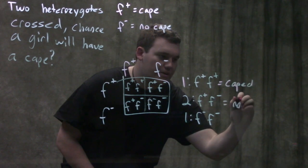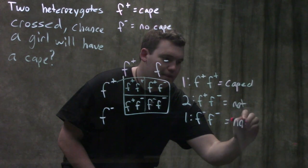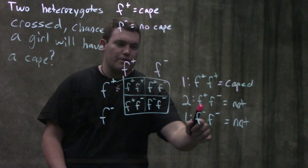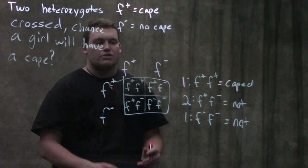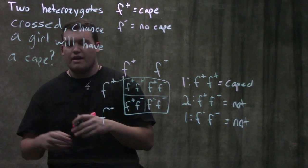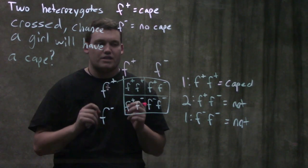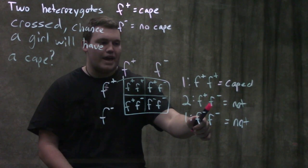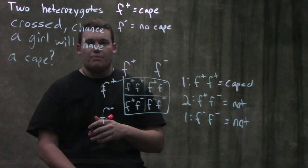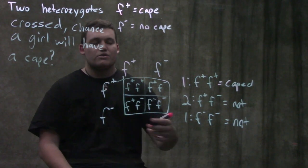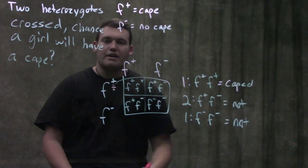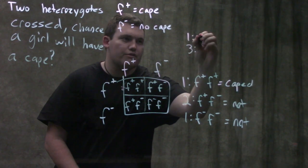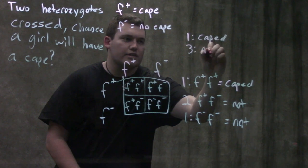Our heterozygote has one cape allele and one non-cape allele. If it were dominant, the trait would show — but in females the cape is recessive. So the heterozygote female will not show the cape. She has one f-minus, meaning the dominant no-cape trait is expressed. We end up seeing a 1:3 ratio of caped to not caped in females.